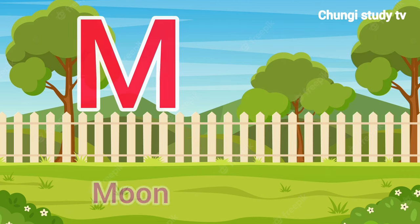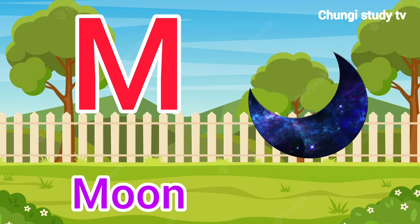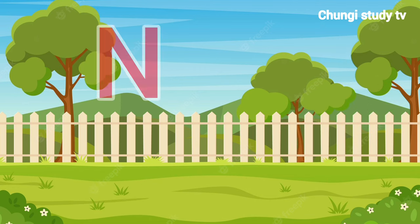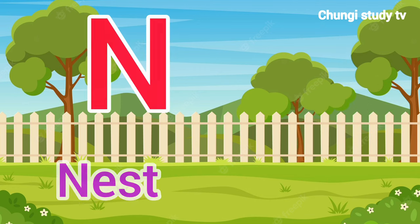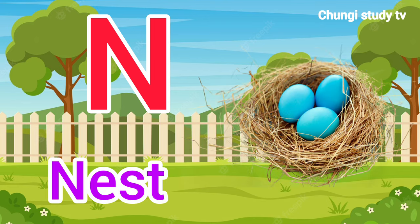M, M for Moon. Moon means Chand. N, N for Nest. Nest means Ghosla.